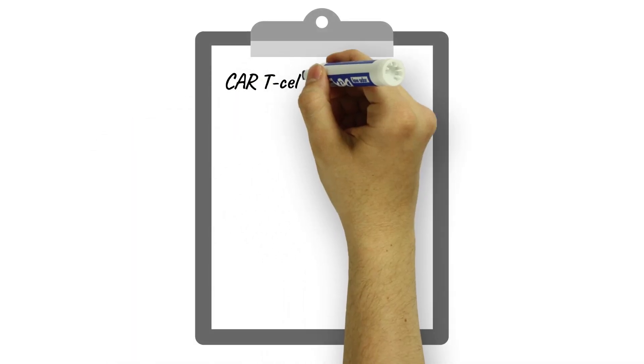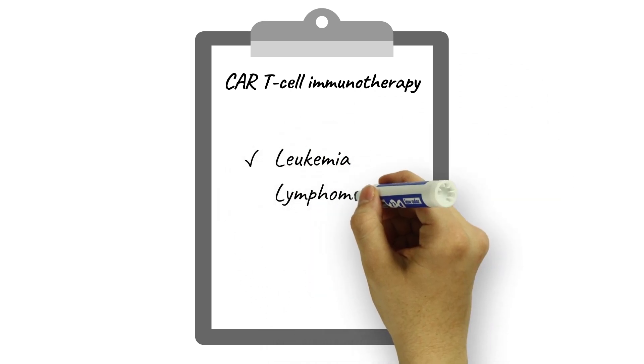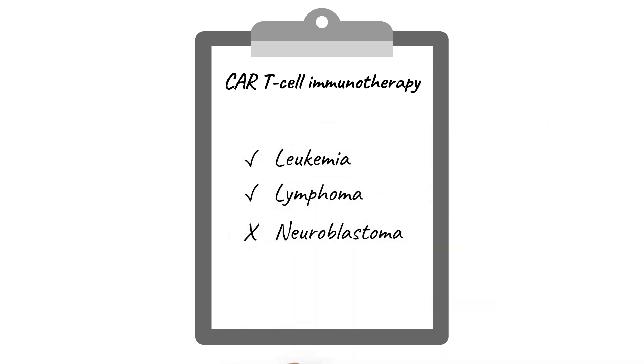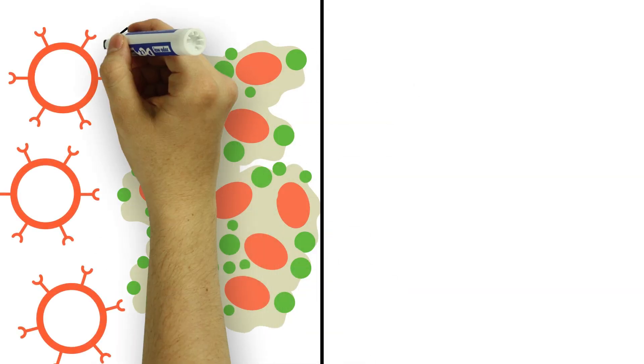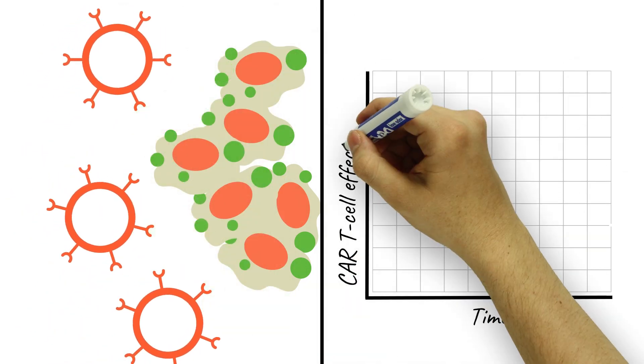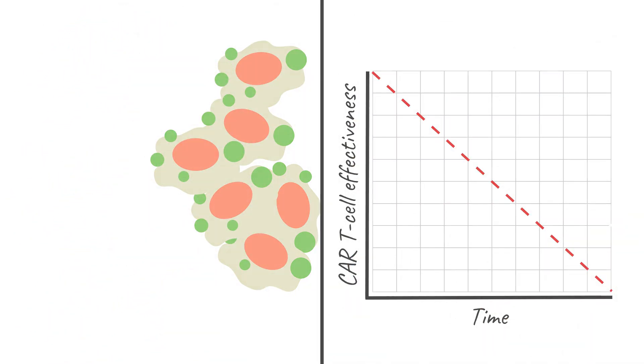CAR T-cell therapy has been effective in fighting blood cancers, but until now, not strong enough to treat solid tumors like neuroblastomas. This is because there aren't any growth factors in a tumor to stimulate the immune system, which prevents sustained activity of the tumor-killing CAR T-cells.